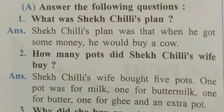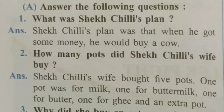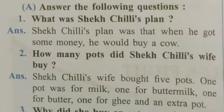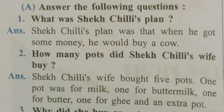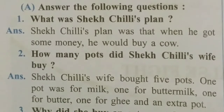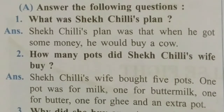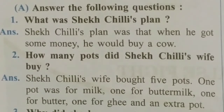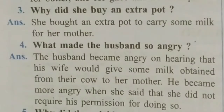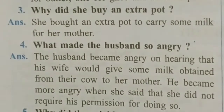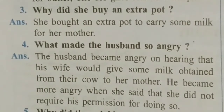Question two: How many pots did Sheik Chilli's wife buy? Answer: Sheik Chilli's wife bought five pots — one for milk, one for buttermilk, one for butter, one for ghee, and one extra pot. (Sheik Chilli ki wife ne 5 pot kharide — eek doodh ke liye, eek buttermilk ke liye, eek butter ke liye, eek ghee ke liye, aur eek extra.)